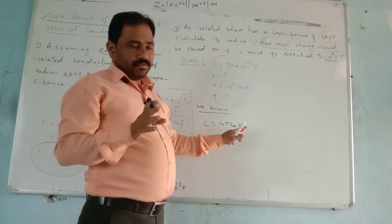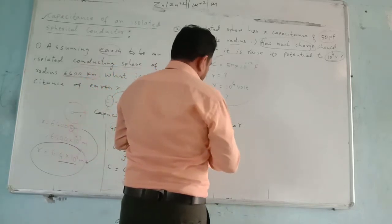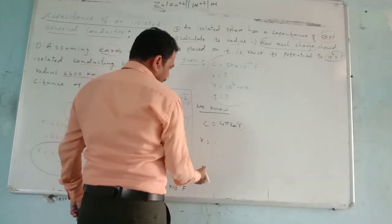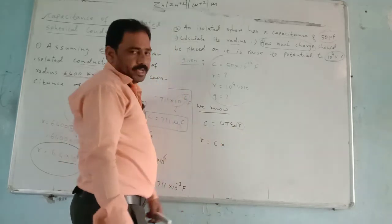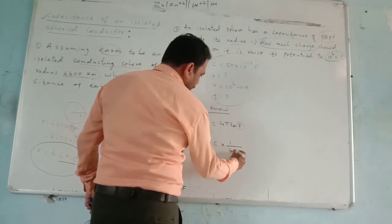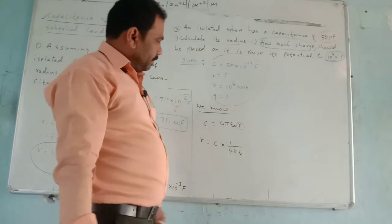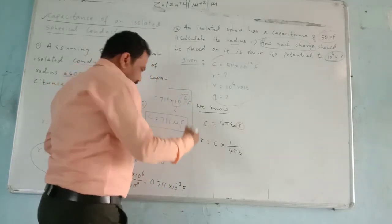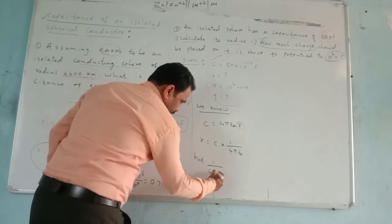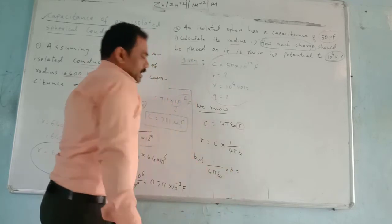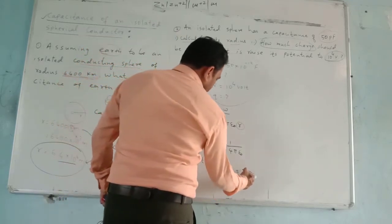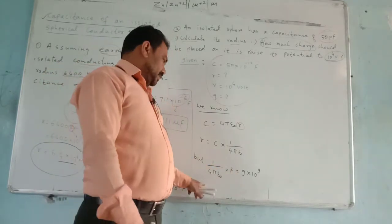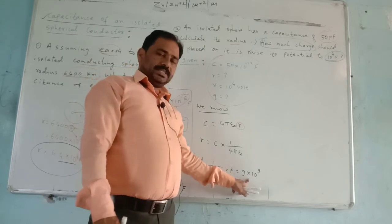The capacitance is given and we have to find R. To find R, we rearrange: R = C × (1 / 4πε₀). We already know the value of 1/4πε₀, which is the electrostatic constant K, and its value is 9 × 10⁹.